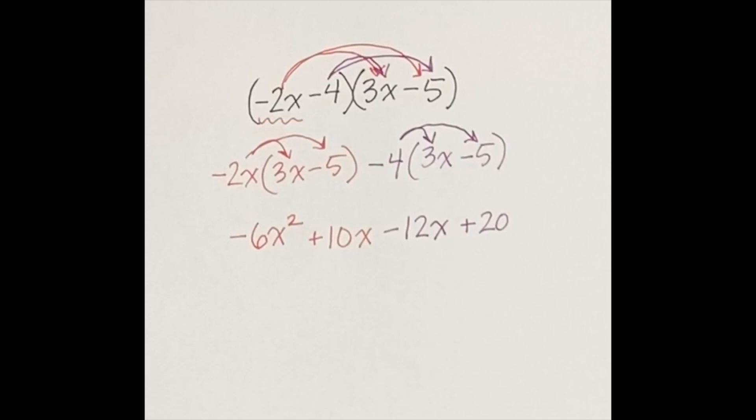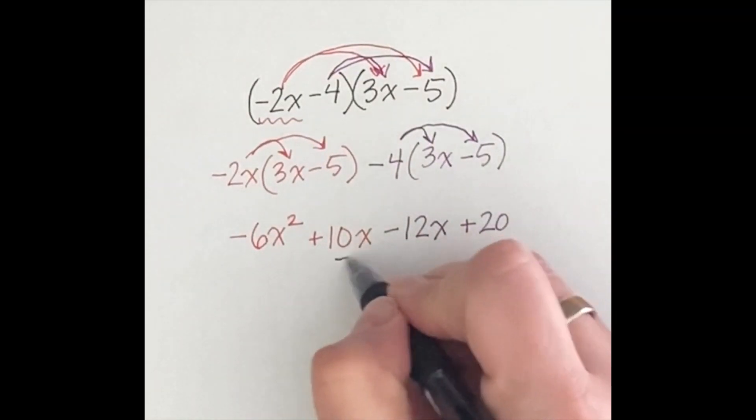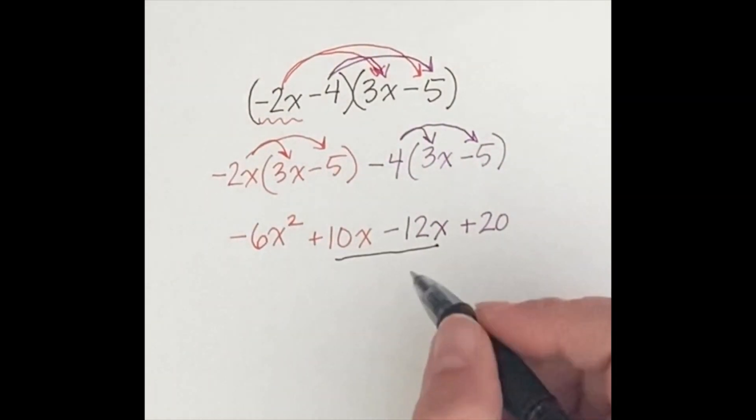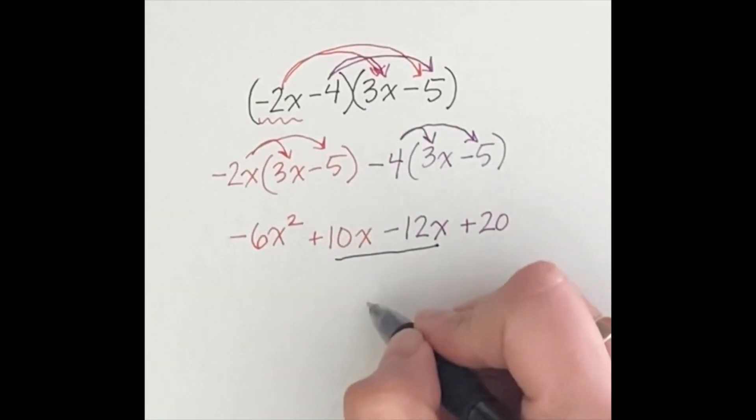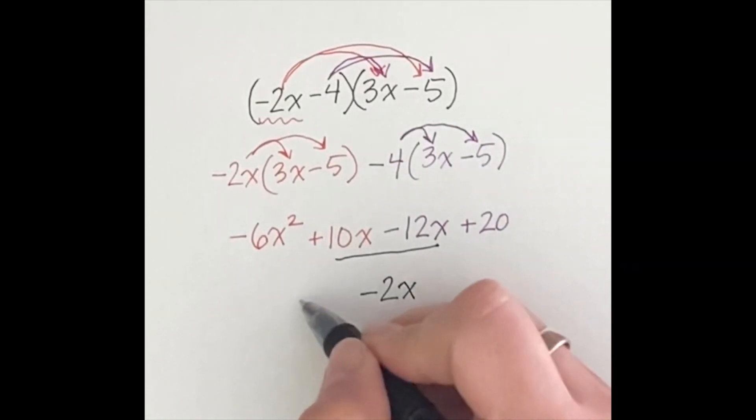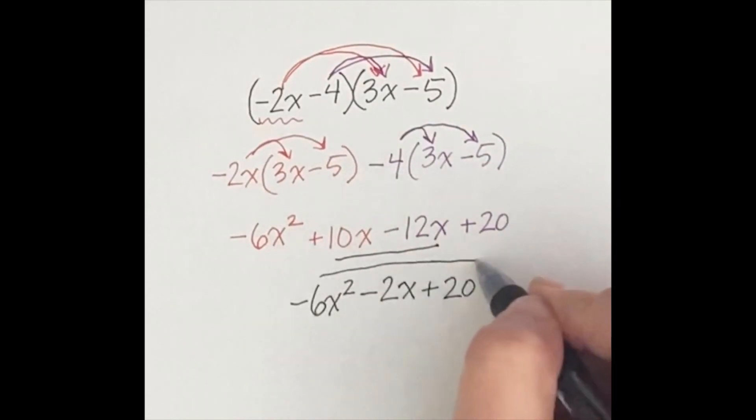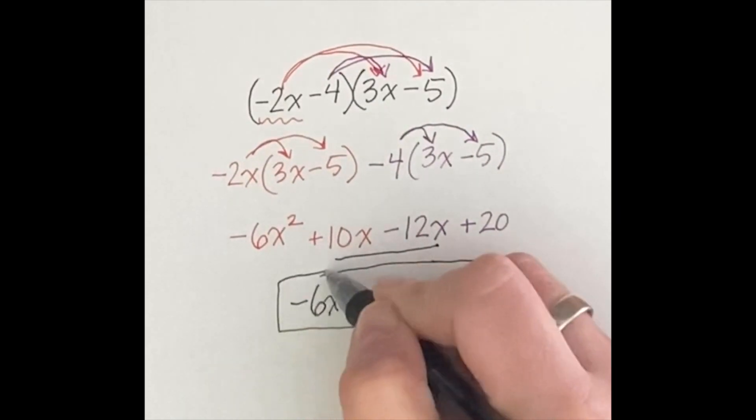Don't forget to look for any terms that you could combine because they would be like terms. I've got a 10x and a negative 12x that are like terms, so I'm going to combine them. I know that 10x minus 12x is going to be a negative 2x. I can't forget about my negative 6x squared and I also can't forget about my positive 20. This is your final answer.